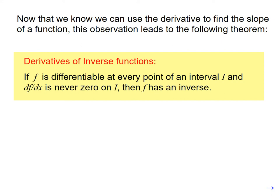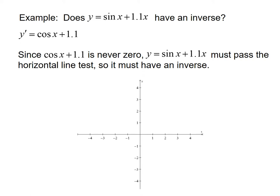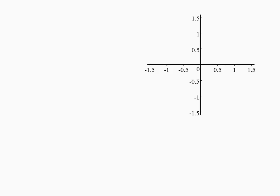So let's use this theorem to answer this question. Does y equals sine of x plus 1.1 x have an inverse? Well, we can take the derivative: cosine of x plus 1.1, and ask ourselves the question, is this derivative ever equal to 0? And since cosine of x is never smaller than negative 1, the answer is no, it is never equal to 0. So it must pass the horizontal line test, it must have an inverse. If we graph it, we can see that it never completely gets down to a slope of 0. The smallest the slope ever gets to be is 0.1 and then it starts going up again.